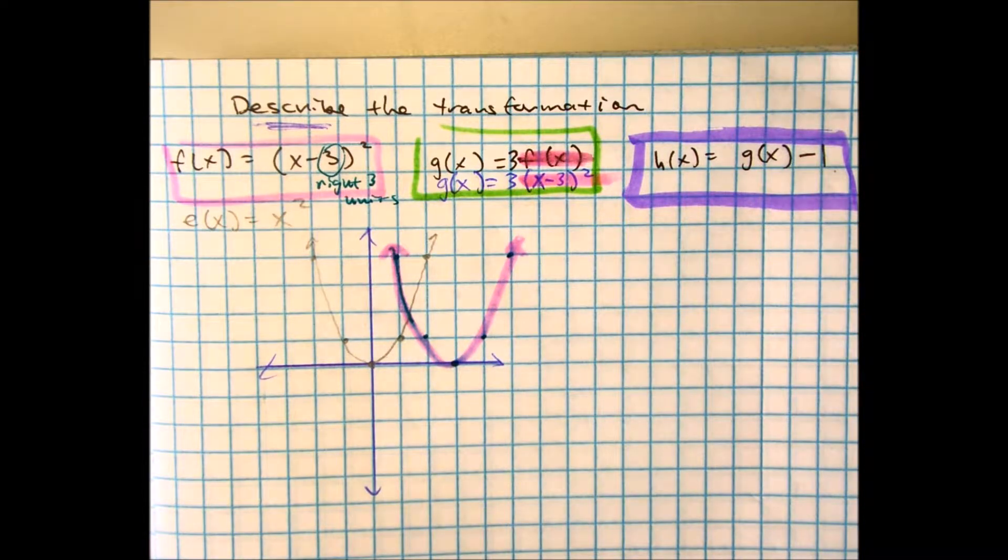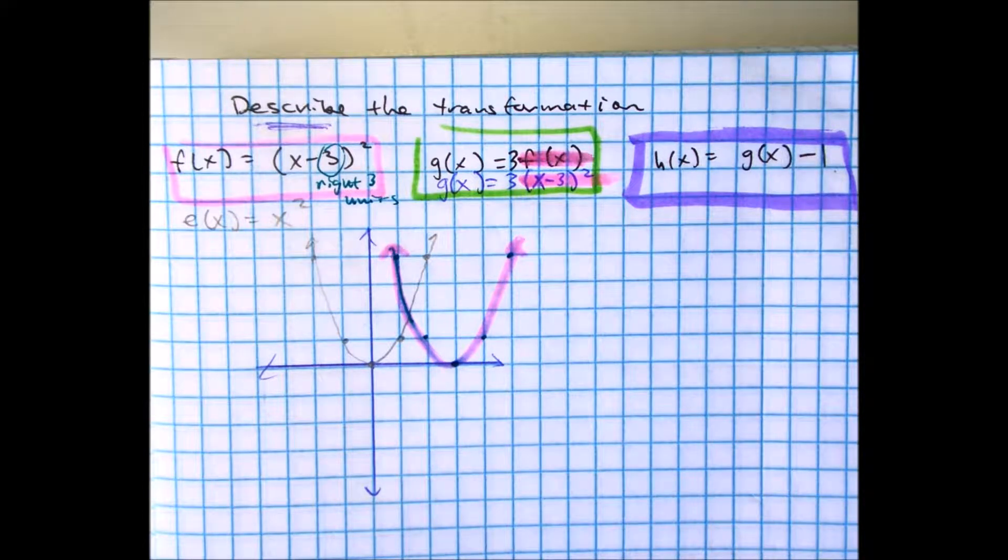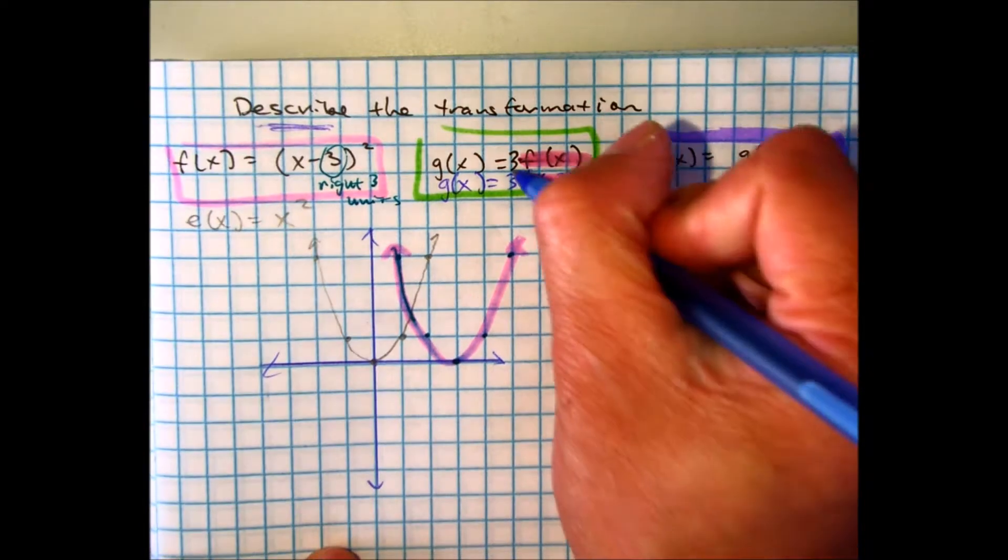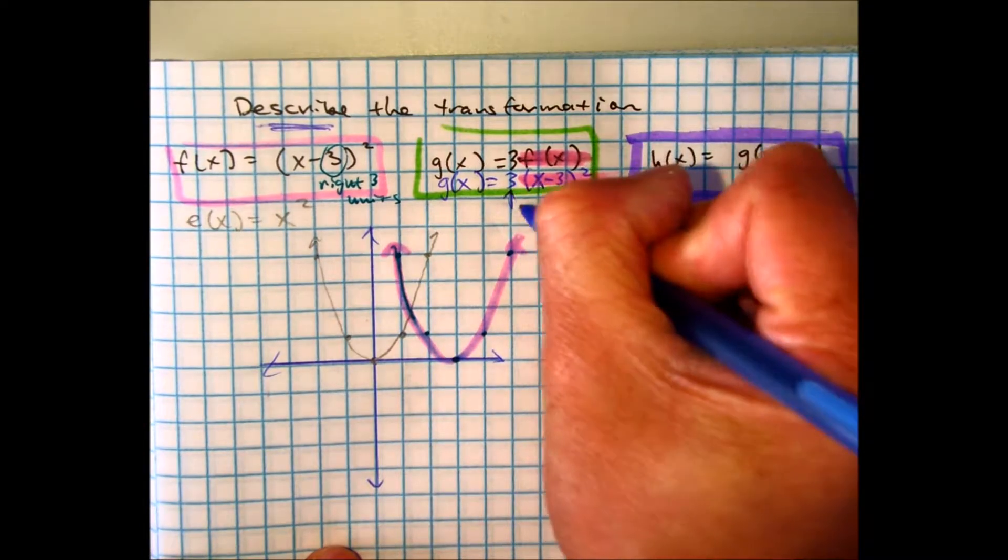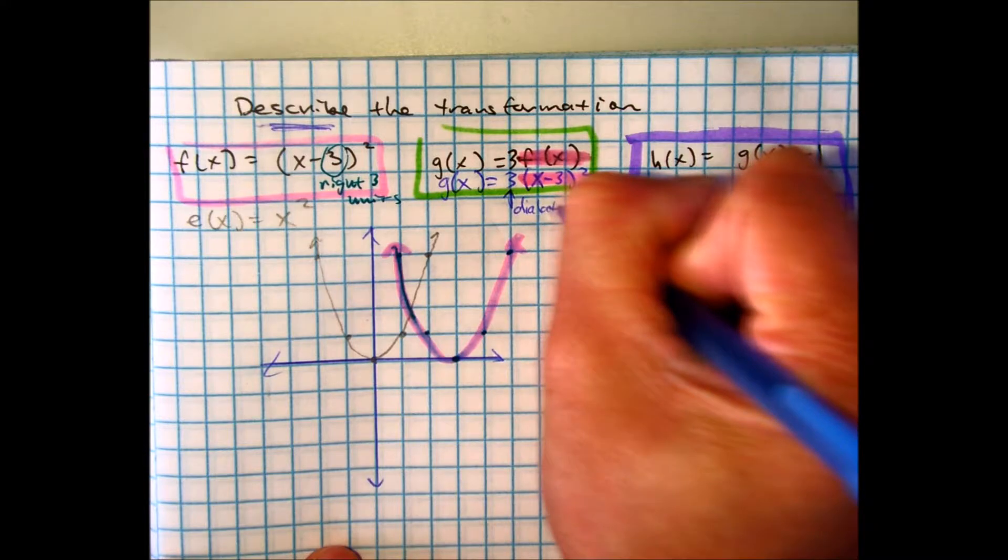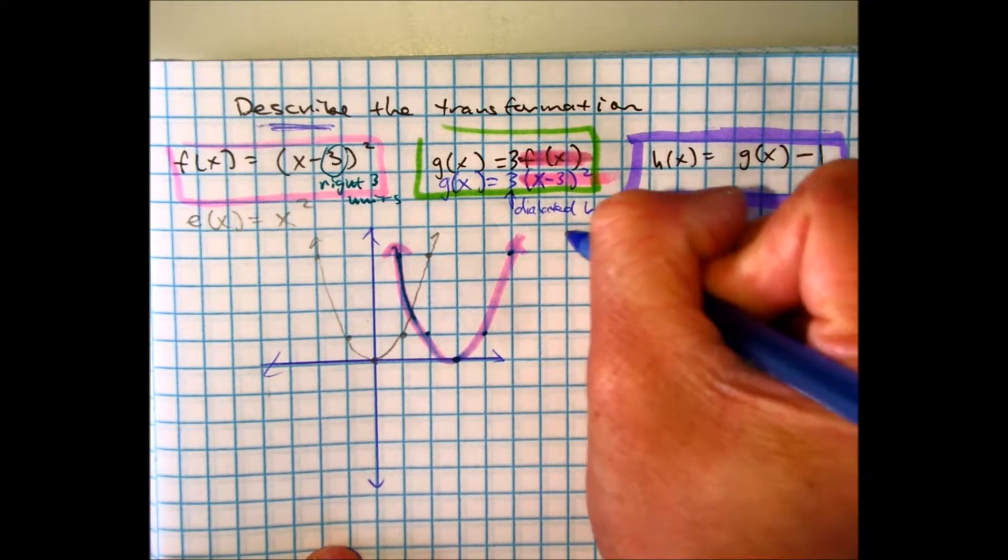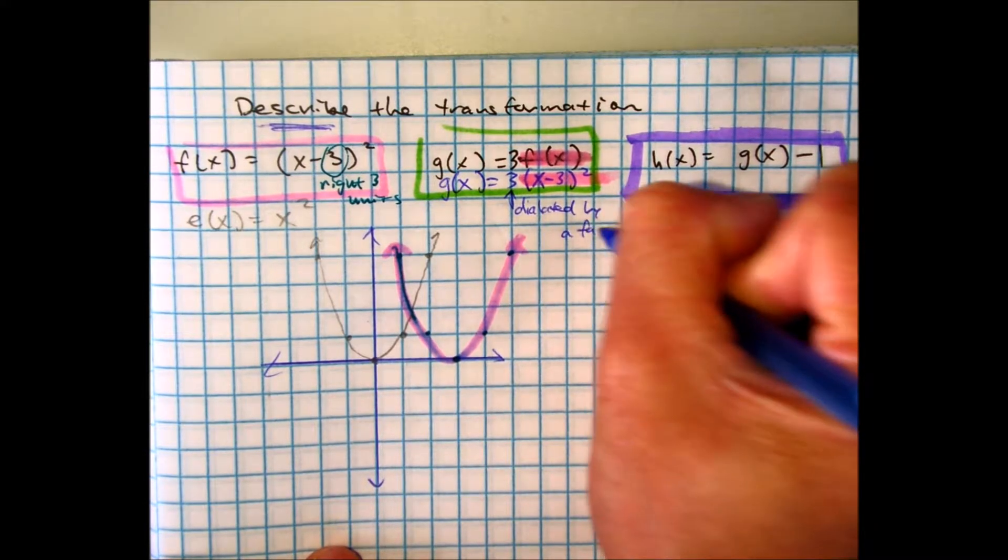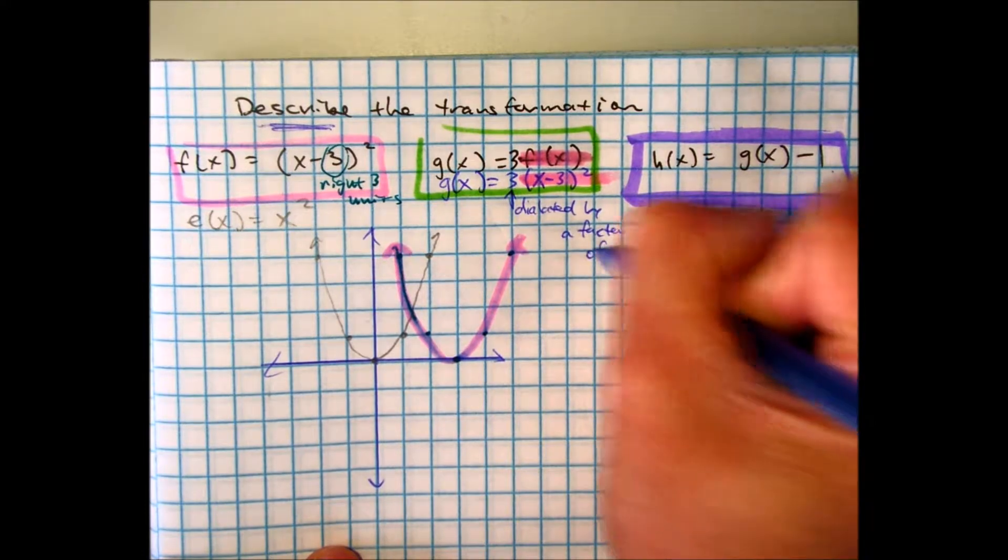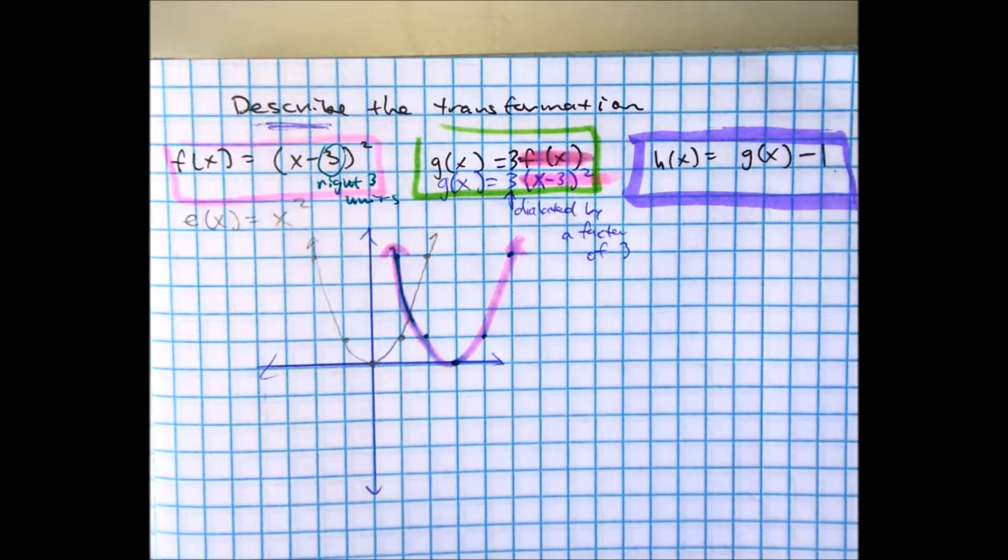Well, the three is on the outside. If the three is on the outside, what did you guys say? Is it a translation, reflection, or dilation? It's a dilation. So this is going to be dilated by a factor of three. What does that mean?